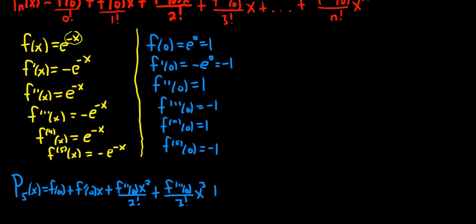plus f triple prime of 0 over 3 factorial x cubed. It's a lot of writing, but it's not hard. plus the fourth derivative at 0 over 4 factorial x to the 4th. And at last, we have the fifth derivative at 0 over 5 factorial x to the 5th. I'm glad it didn't say n equals 20.